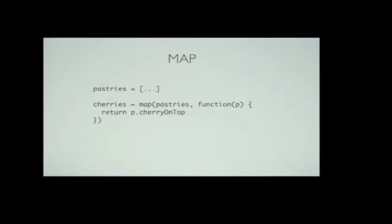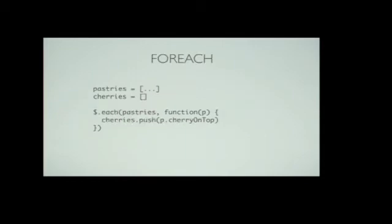Here's a very simple function. Let's say we have a list of pastries, like a bag of pastries. The map function basically goes through the list and applies the function I've given it to every item on the list. So it's a really simple idea. For each item, it returns the cherry on top. So for each pastry in the bag, we grab the cherries. This should be very familiar to anyone who's used jQuery. I'm sure everyone here has.